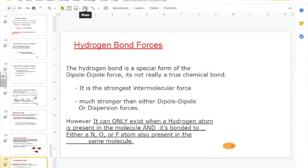The last is hydrogen bonds, which technically is just a form of dipole-dipole. It's the strongest, and it only exists when a hydrogen atom is present in the molecule and is bonded to either a nitrogen, oxygen, or fluorine atom.